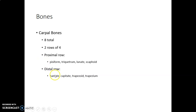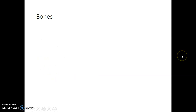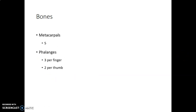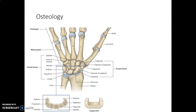The first group are on the lateral side and these are on the medial side. We have five metacarpals and three phalanges on each finger except the thumb, which has two phalanges.